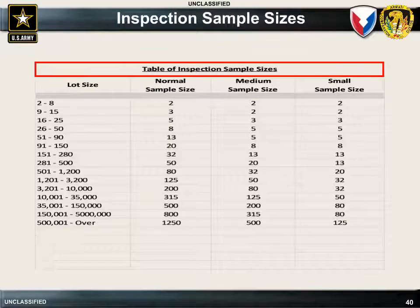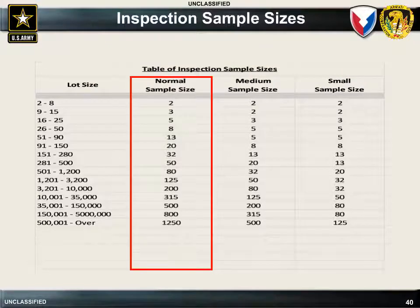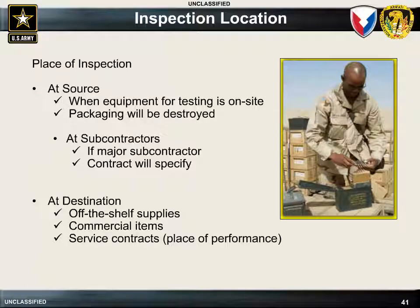This is a table of inspection sample sizes that can be used with the random inspection method. Generally, the COR will use the column labeled Normal Sample Size to determine the number of items to be evaluated based on the original lot size. The location of government inspections will be specified in the contract as either source or destination. Source usually refers to the contractor's facility where items will be built and tested. Destination will be used for commercial or off-the-shelf items and the place of performance for service contracts.